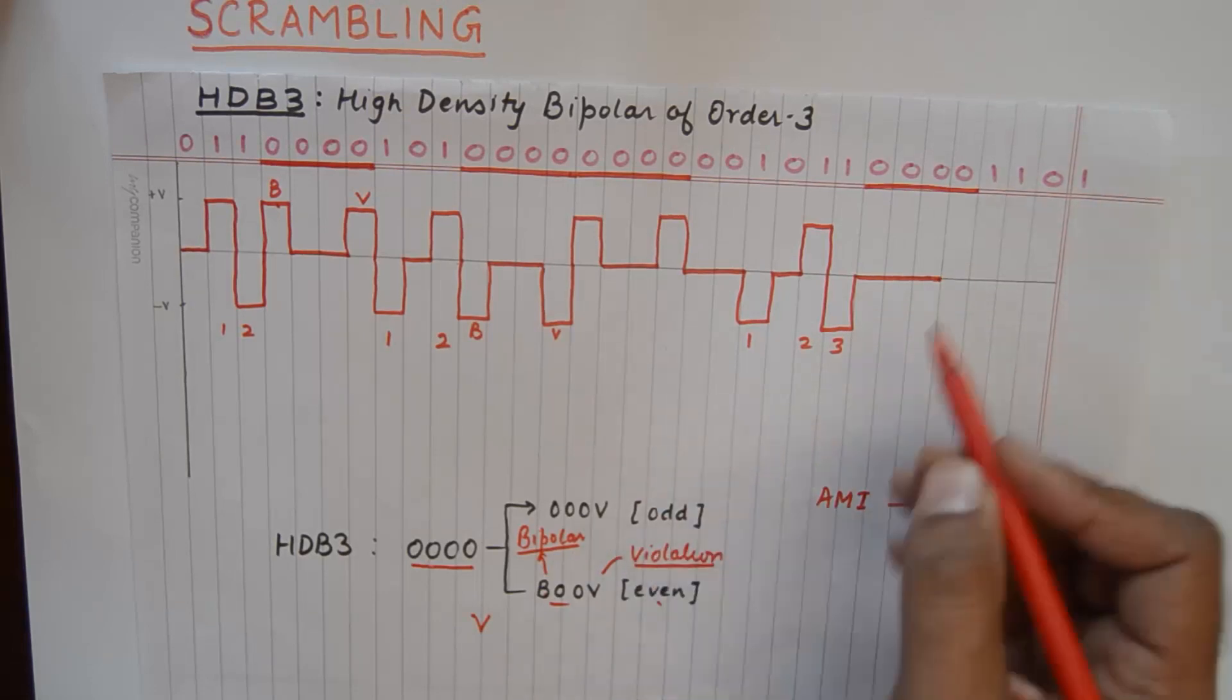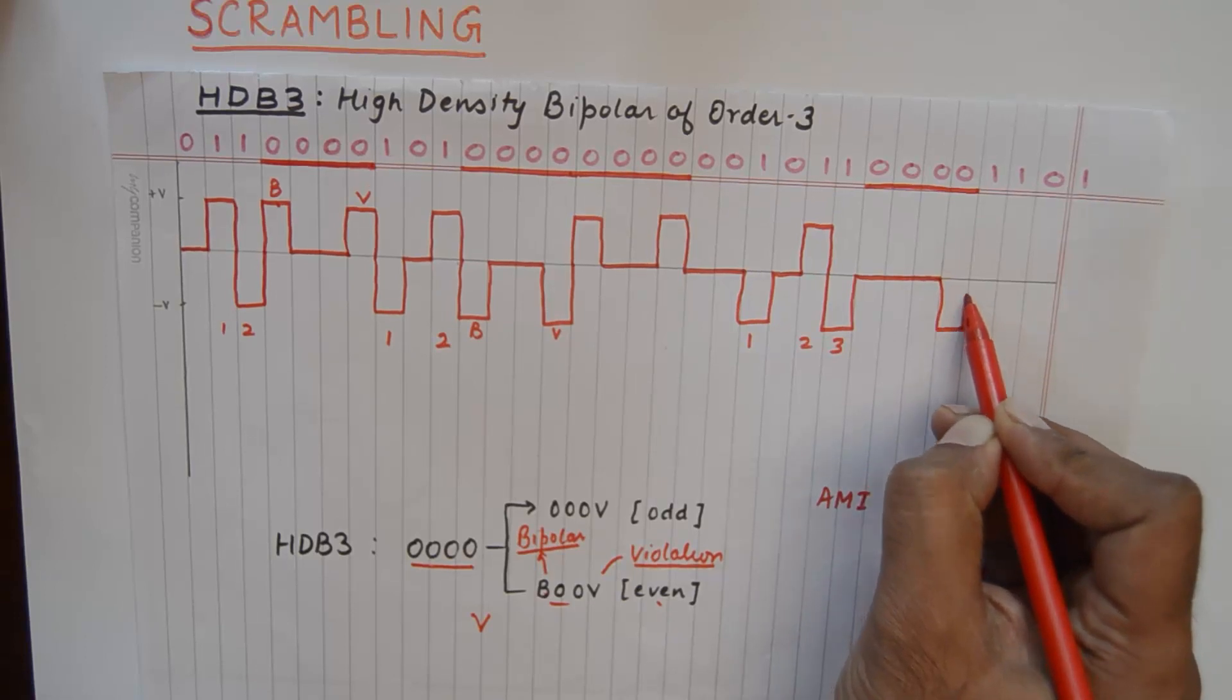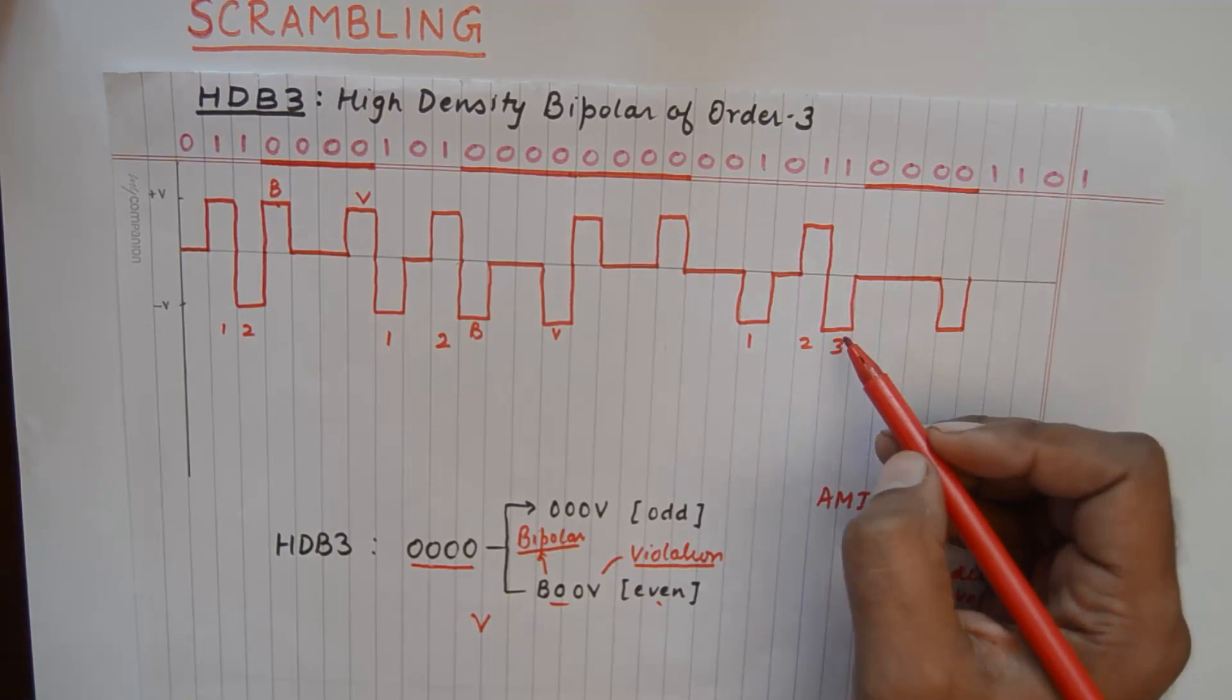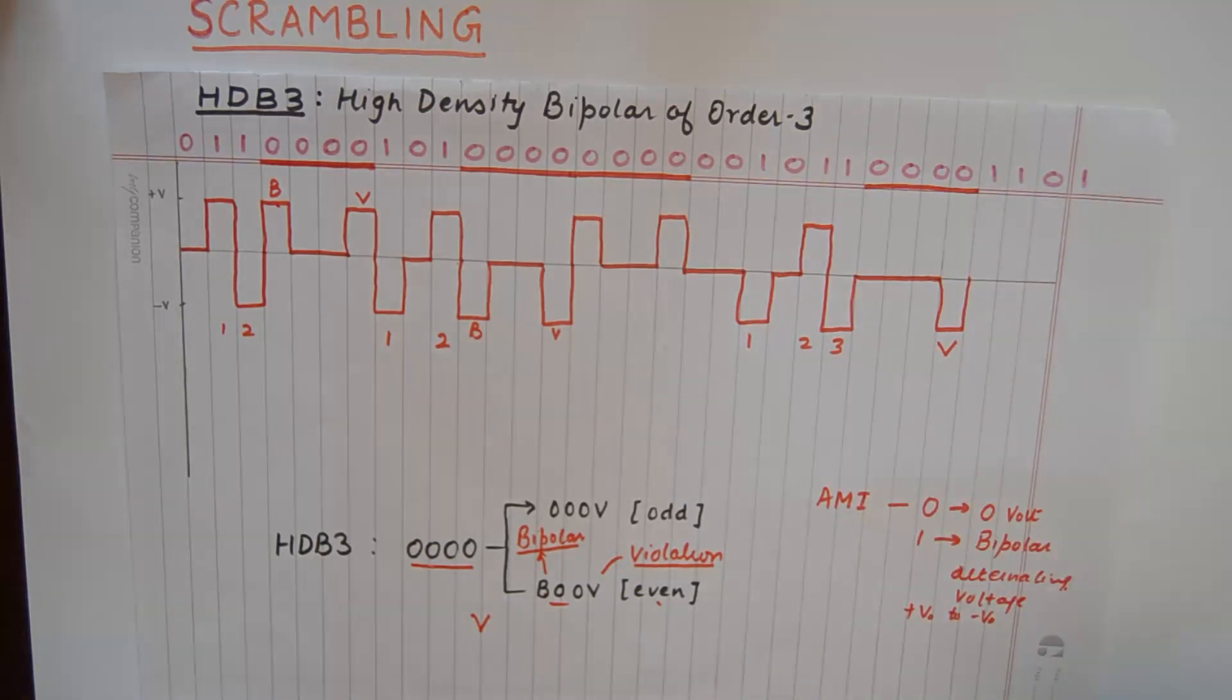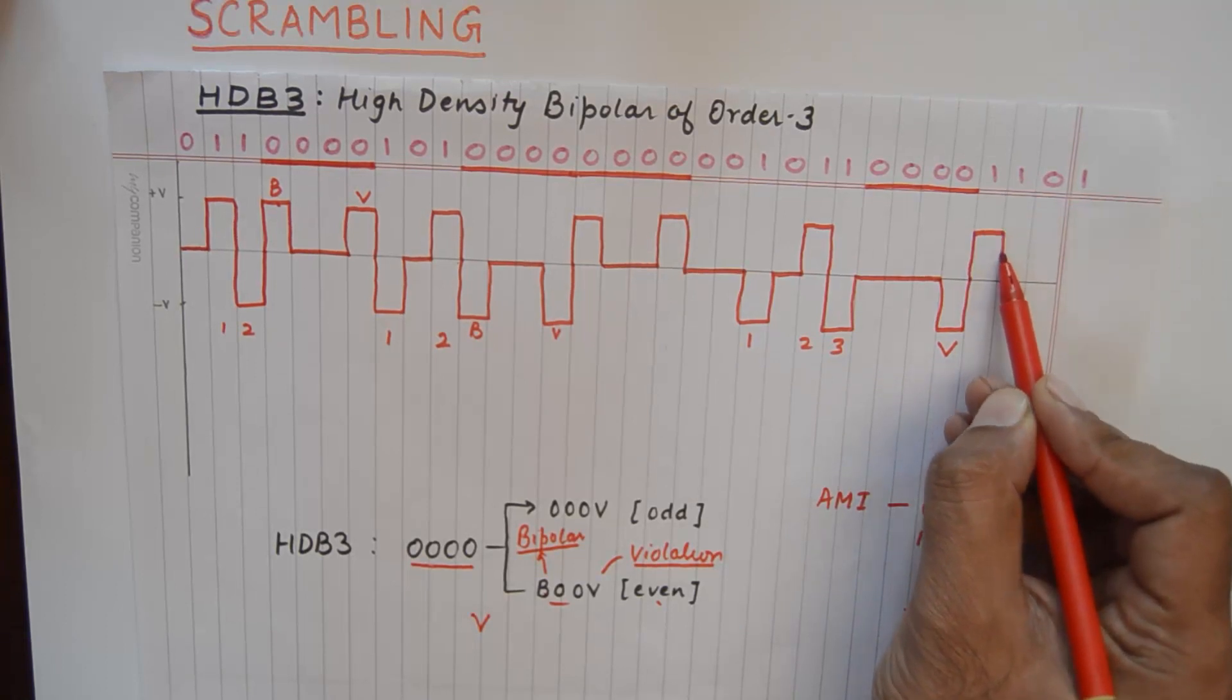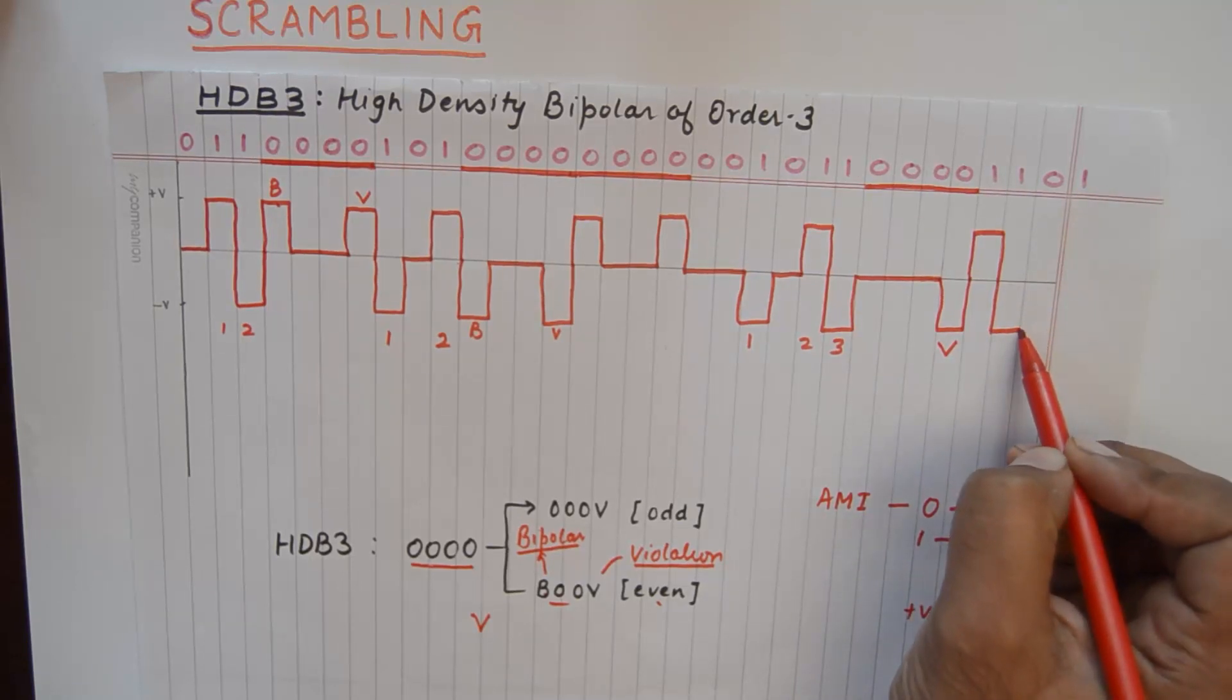And the last zero will be a violation. So a violation is represented by the same polarity that we used in the previous voltage level for one. So this is a violation. And then this one will be marked by an alternate voltage. This one again marked by an alternate voltage.